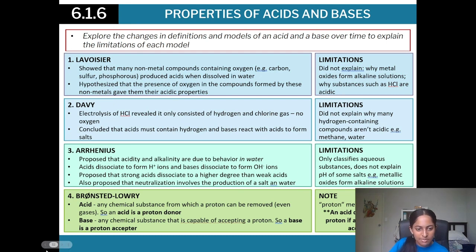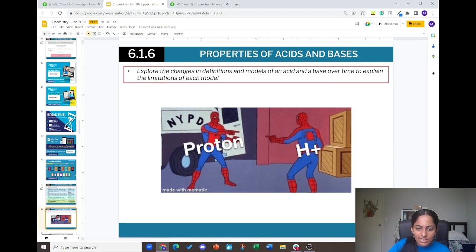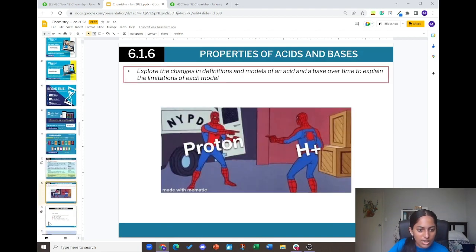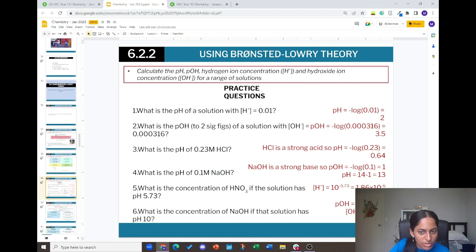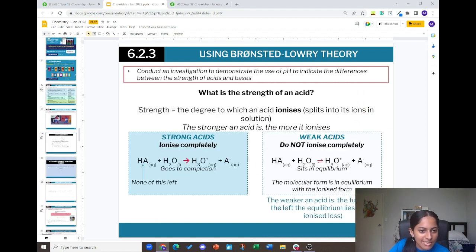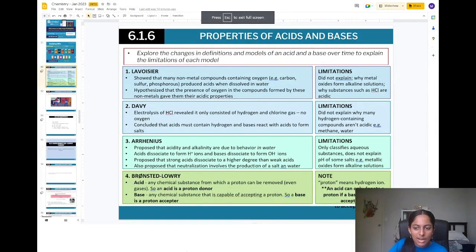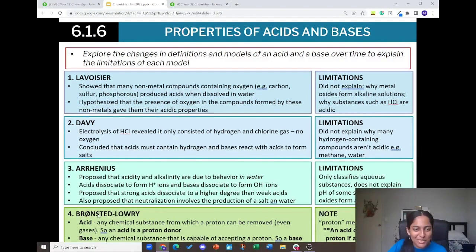Then there's Brønsted-Lowry, which is the main definition used in school. For acids, they're proton donors — meaning they donate a hydrogen ion. Bases are proton acceptors — they accept a hydrogen ion. In the equation for a strong acid like HCl: HCl + H₂O → H₃O⁺ + Cl⁻. The acid donates the H⁺ and becomes A⁻; water accepts the proton and becomes H₃O⁺ — that's how hydronium is formed.